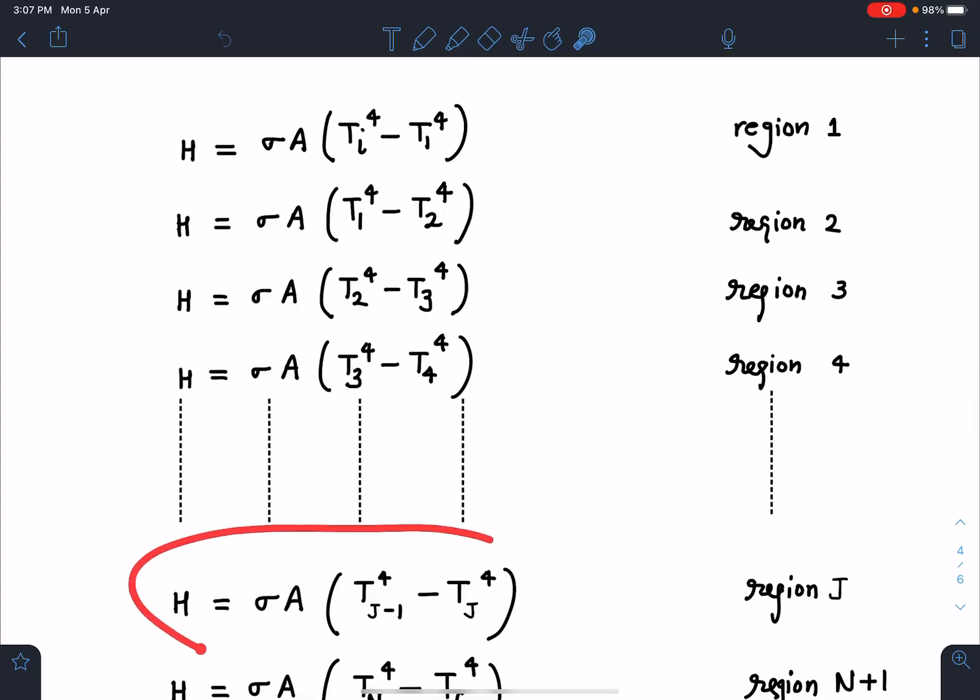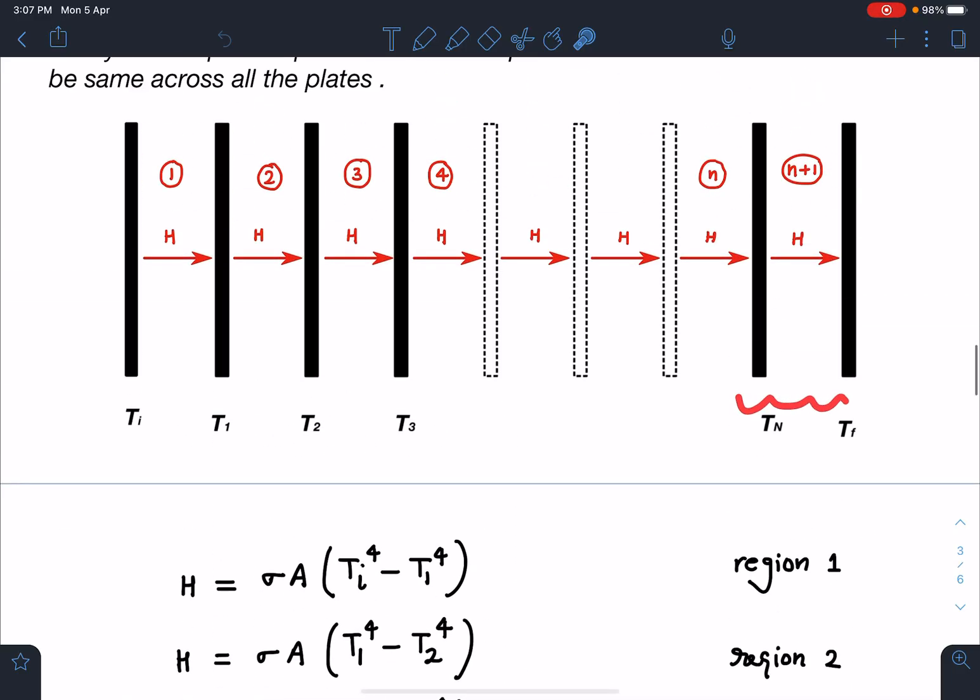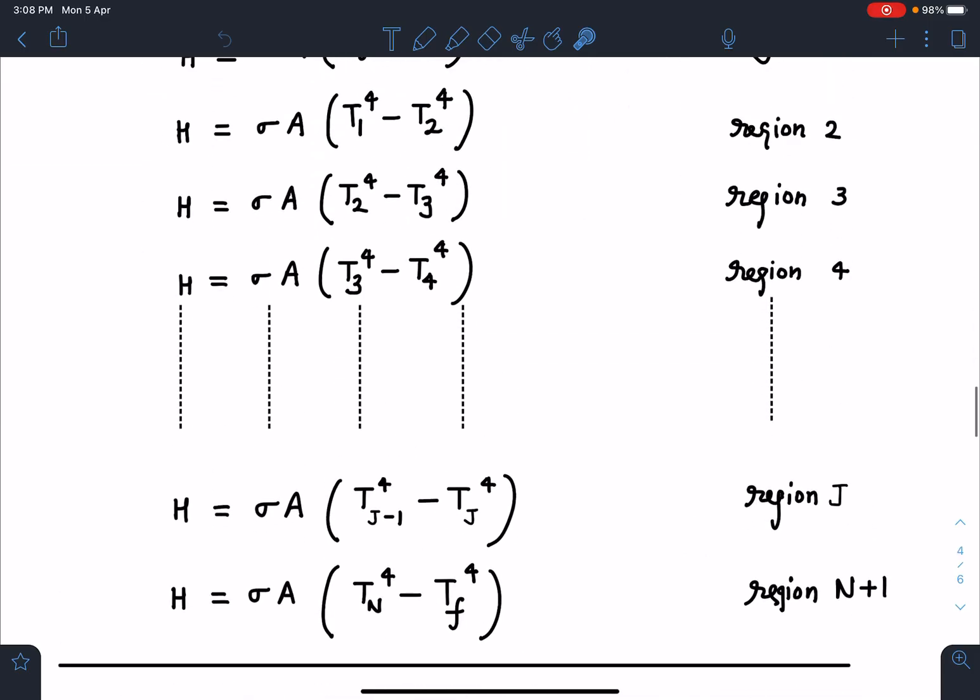I am writing for jth region. You can see for region 4 this is coming as T3 to the power 4 minus T4 to the power 4. And here I can say H is equal to sigma A TJ minus 1 to the power 4 minus TJ to the power 4, that is for the region J. And for region N plus 1, that means these two plates, this H is going to be sigma A TN to the power 4 minus T final to the power 4.